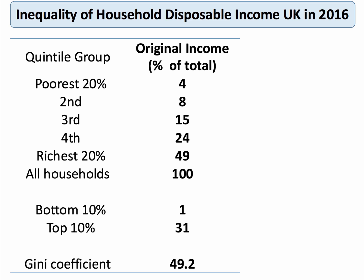So original income is quite highly skewed in terms of inequality. The Gini coefficient for original income is 49.2, or 0.492 as a fraction, which is pretty high.